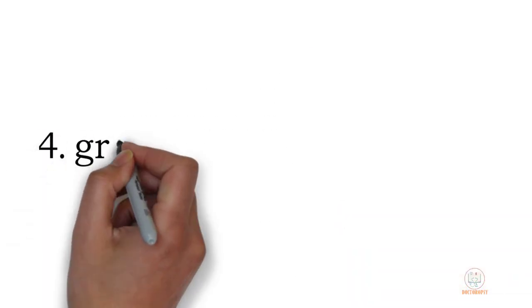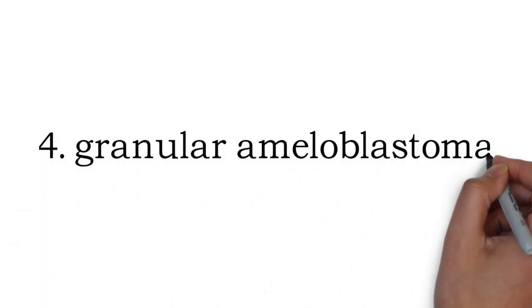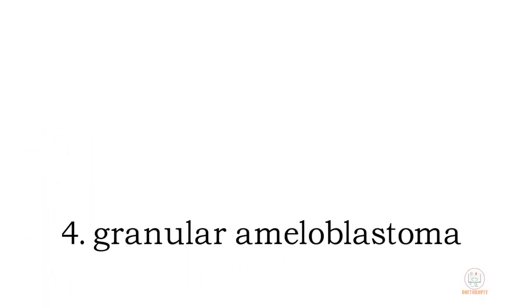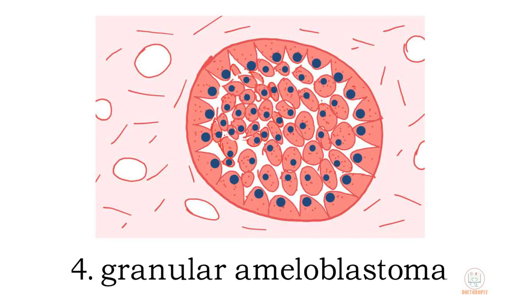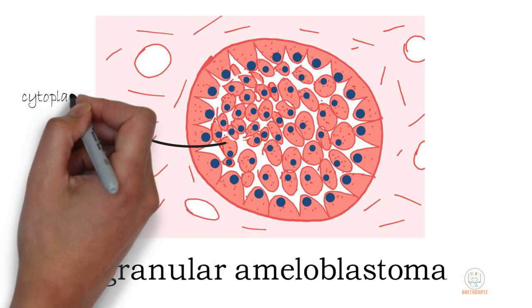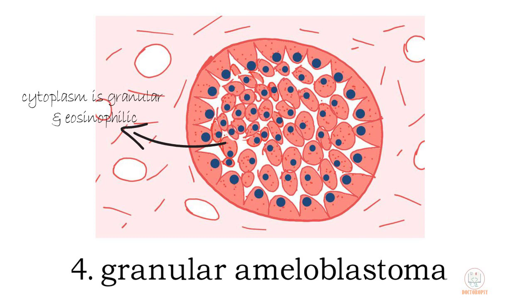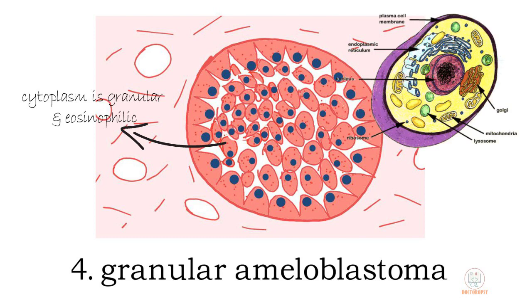The fourth type is the granular ameloblastoma. As the name suggests, the cytoplasm of the epithelial component appears granular and eosinophilic. Both central cells and peripheral cells of the tumor islands show these granules. Studies have shown that these granules are actually lysosomes.